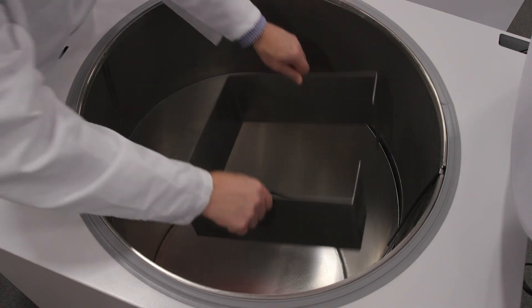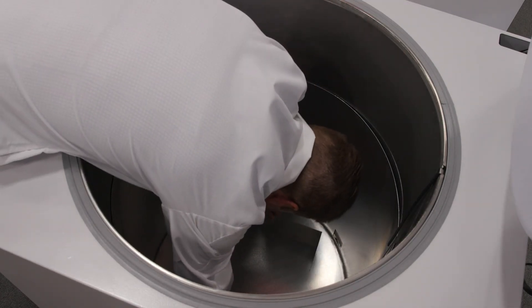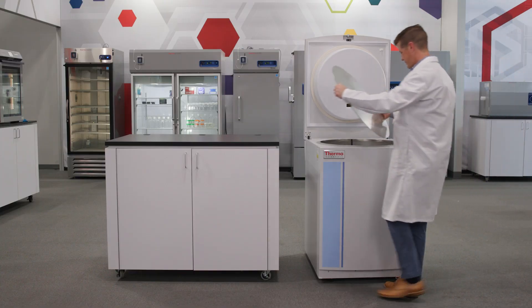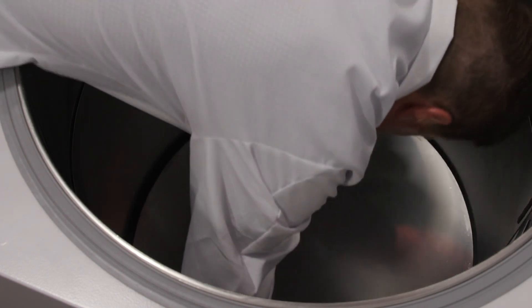As you can see demonstrated here, the riser is placed in the unit first and a platform is placed on top of the riser to give you a raised flat base that then you can arrange your racks on.